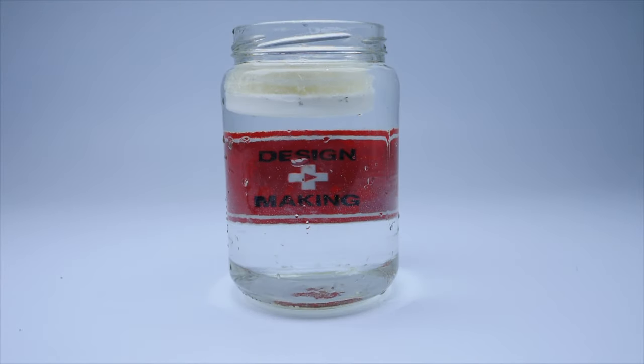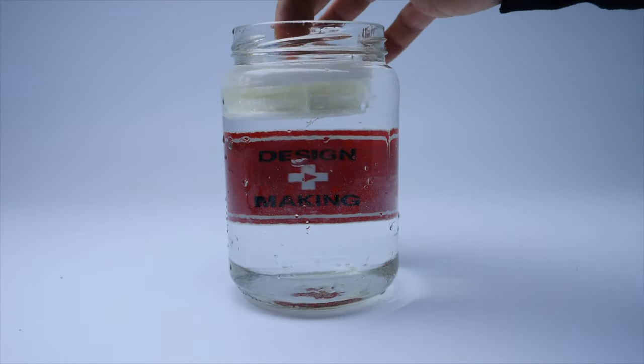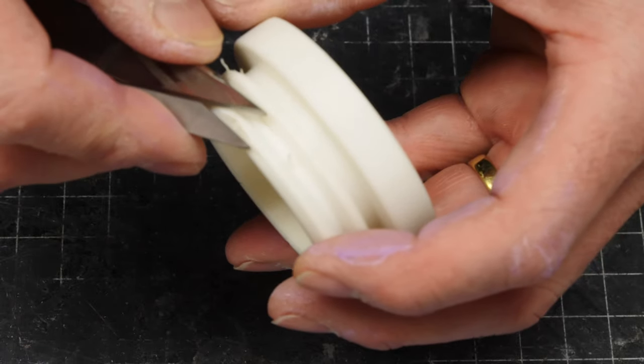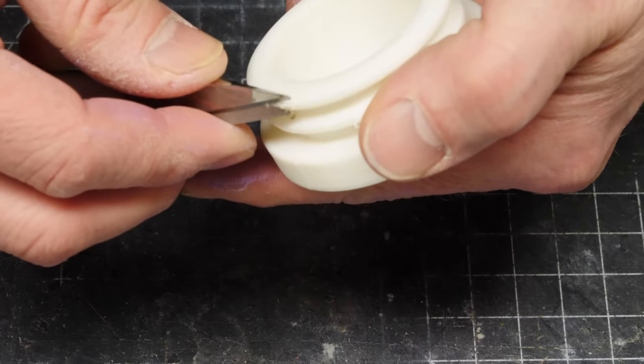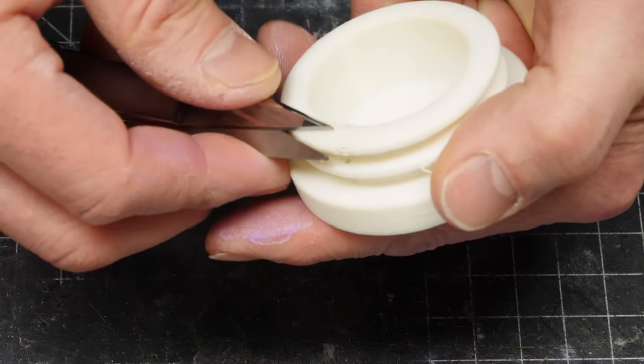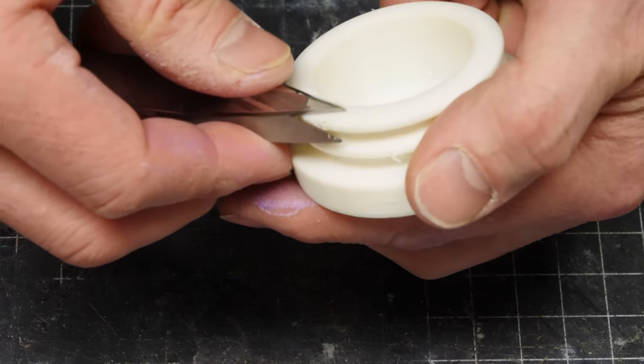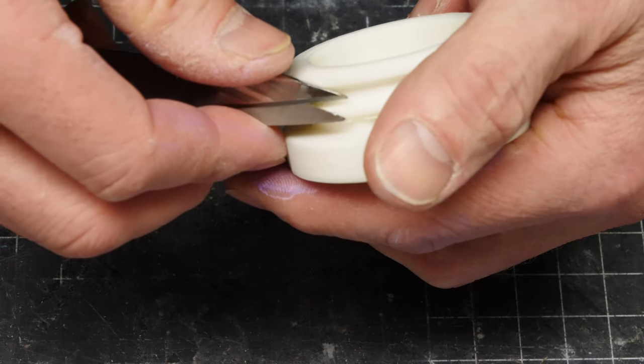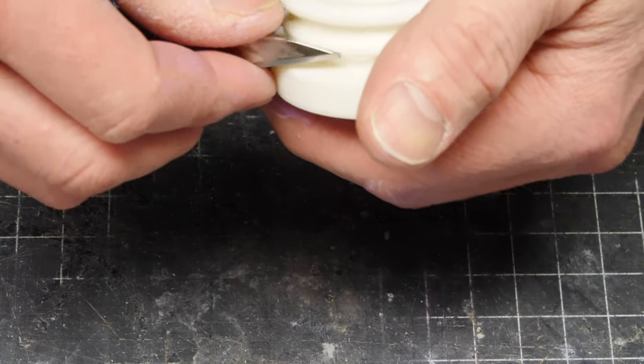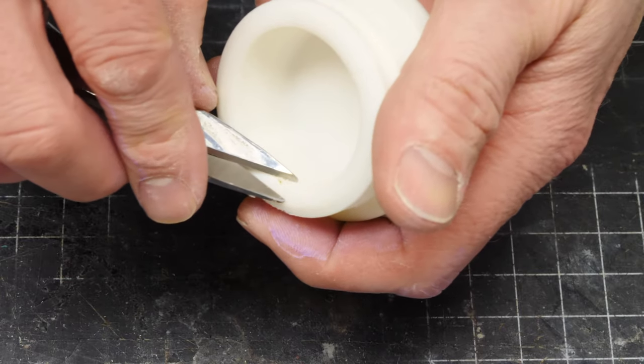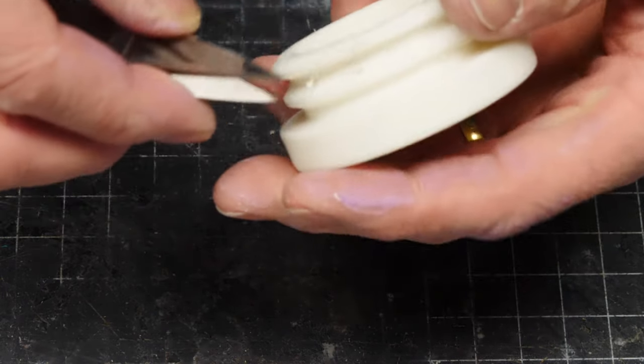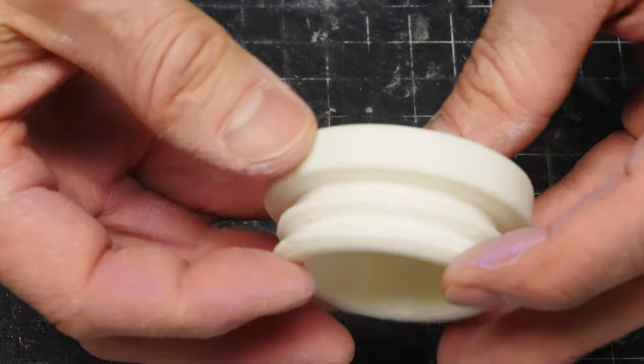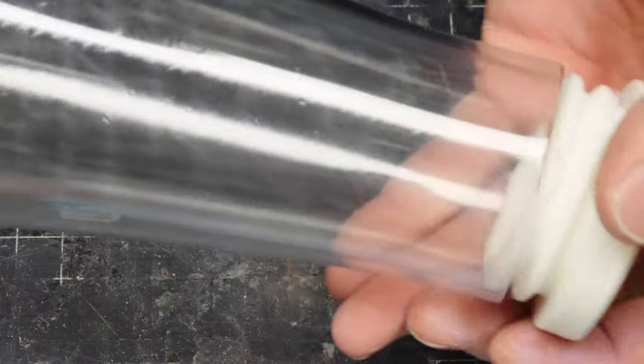Next, we need to 3D print the cap. And so this is FDM printed. This is a flexible PLA. I'm just trimming off a little bit of the printing strings, whatever you want to call it. This is printed on a dual filament Ultimaker. So I had water-soluble supports, and that's what you saw the part go into in the beginning to dissolve the supports around the threads.